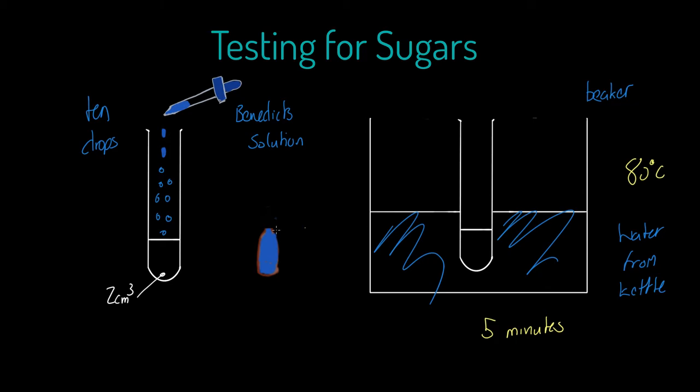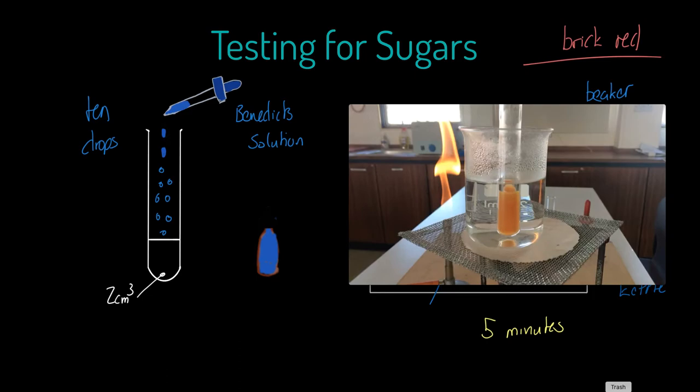Just to go through what you might see, you might see initially that it goes a kind of green color, then it turns into a yellowy color. If there's lots of sugars present, it will turn a brick red. I want to write that term in here for you. If there is lots of sugars present, it will turn a brick red. I thought I would treat you and show you an example of this in this little timer.